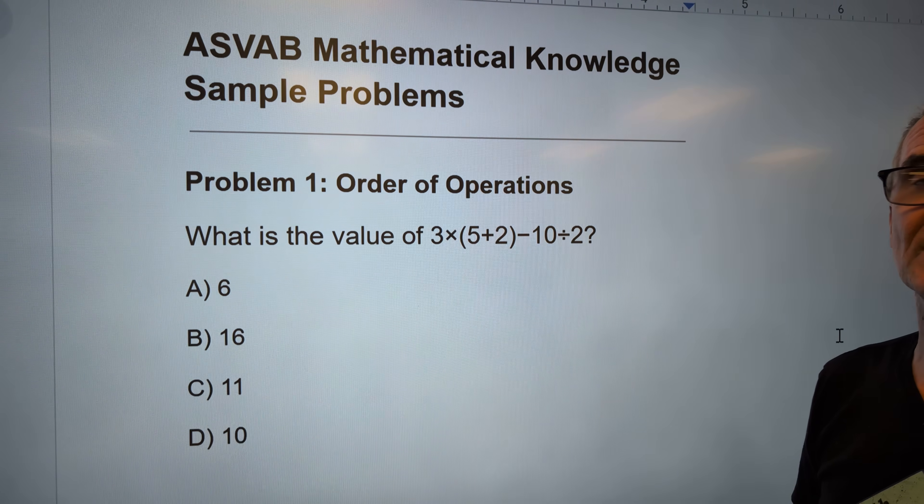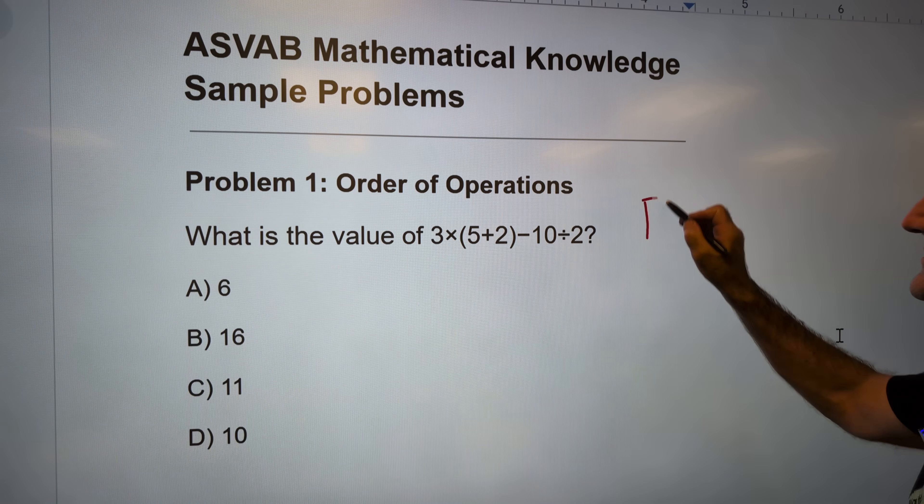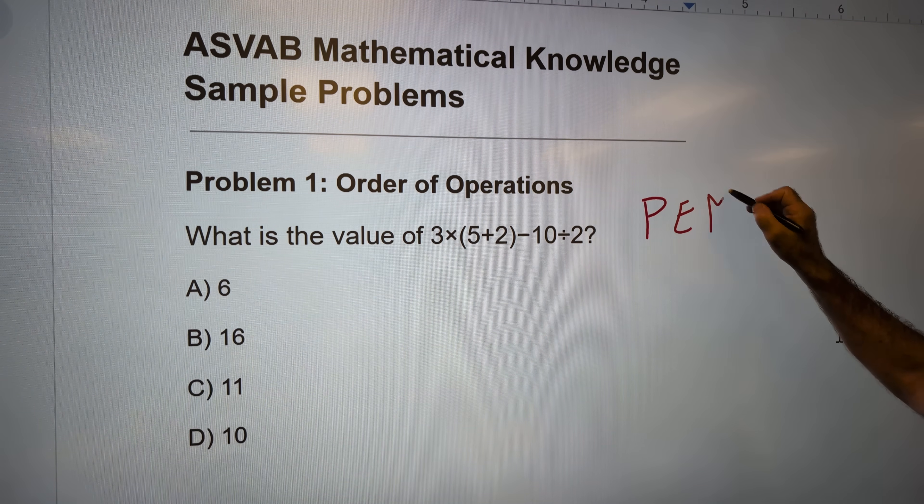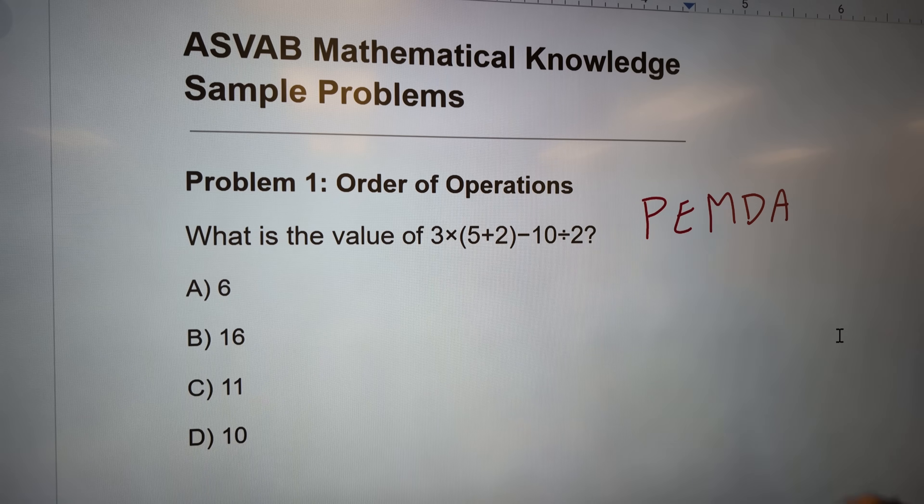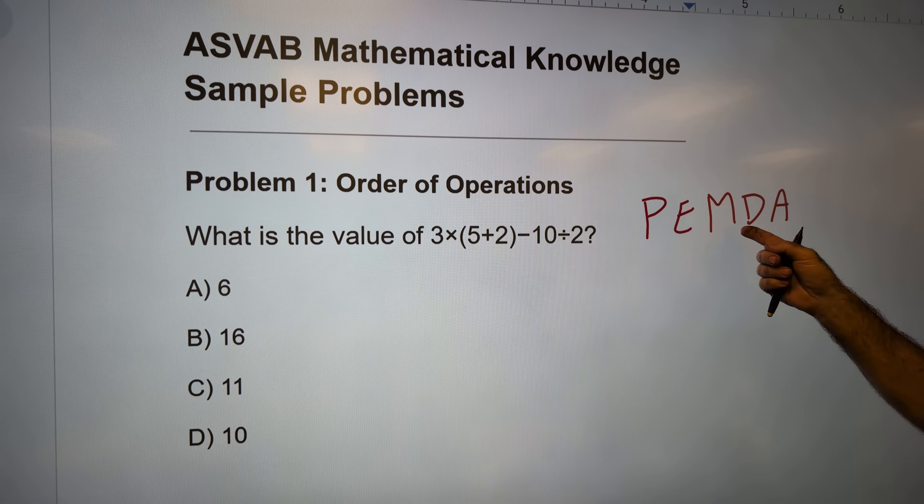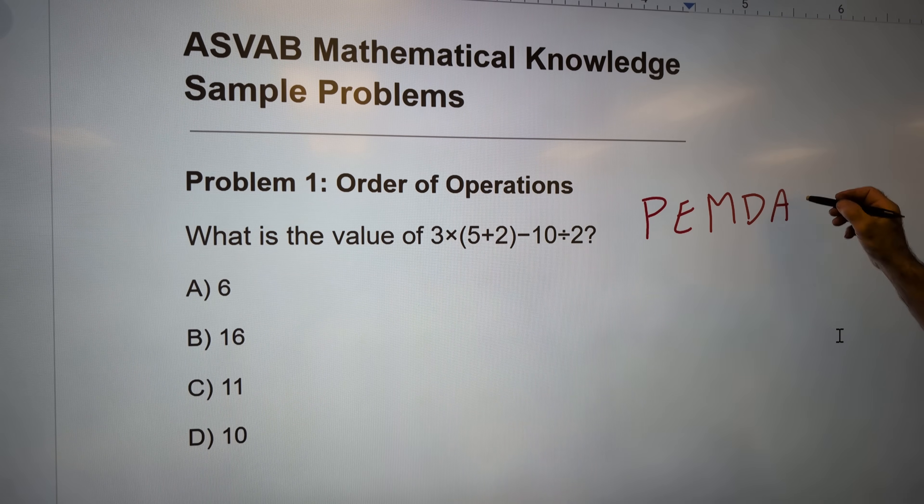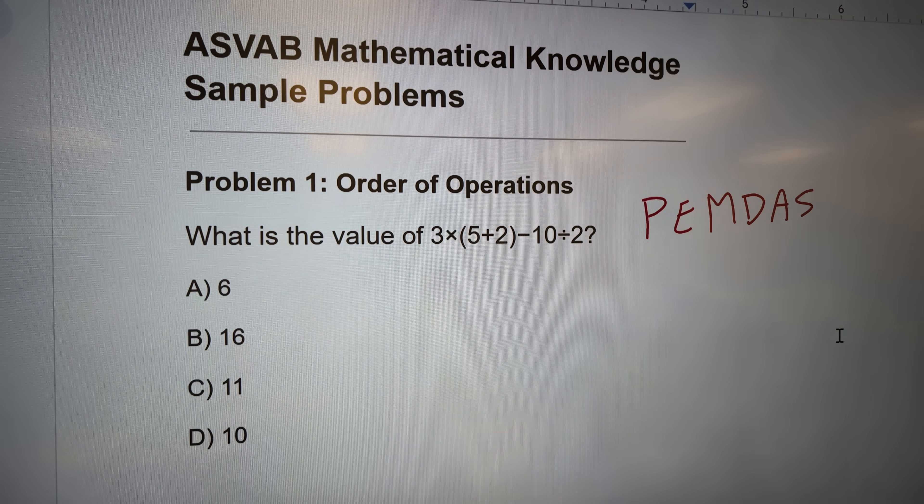Number one is about order of operations. Usually use this device, PEMDAS. What that means is you do your parentheses first, then your exponents, multiplication, division, equal weight from left to right, addition, subtraction after that, left to right.